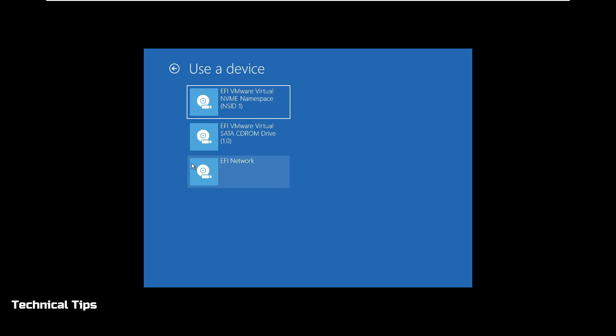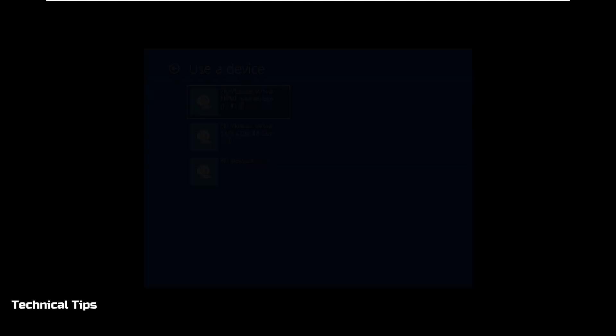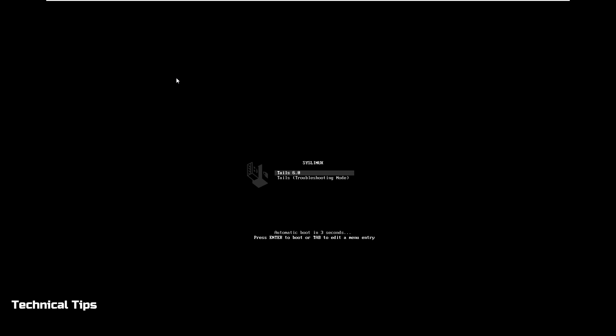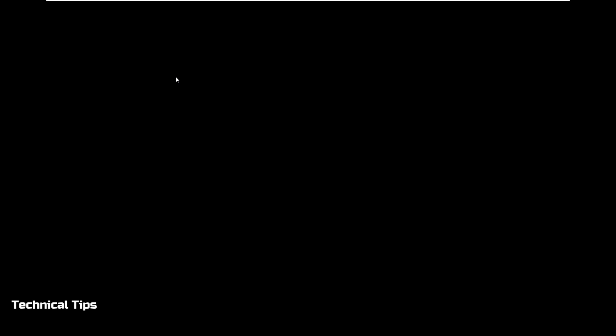There will be an option for an external USB device. The first option is likely the USB drive, so click on that and your computer will boot from the connected USB drive. You will see a boot menu — the first option is highlighted. Just wait 5 seconds and it will automatically boot using the first option, or you can press Enter.